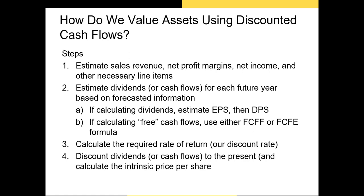Our third step is to estimate the discount rate. If we're using the free cash flows to the firm method we want to use the weighted average cost of capital. Whereas if we're using the free cash flows to equity method we want to use the CAPM to estimate our discount rate. Finally we need to discount our expected free cash flows by the discount rate and produce our intrinsic value.